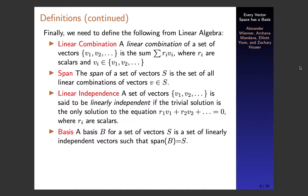The span of a set of vectors is the set of all linear combinations of those vectors. Linear independence means a set of vectors is linearly independent if the trivial solution is the only solution to the linear combination equation — that is, the only coefficients that work are all zero. Finally, a basis for a vector space is a set of linearly independent vectors that spans that space.